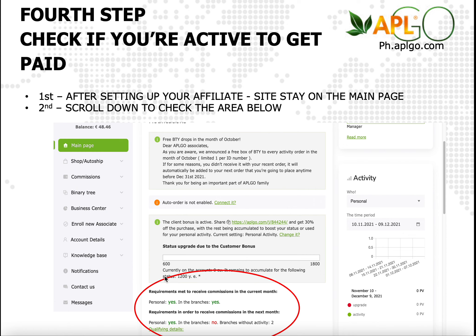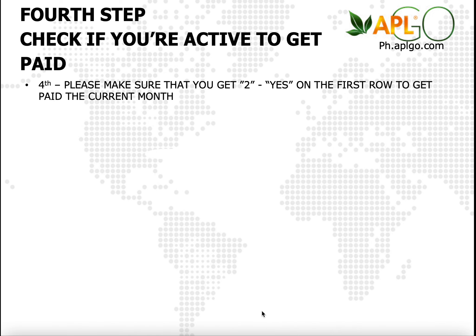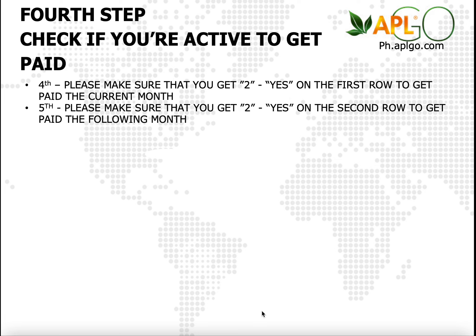It's very, very important. What is this for? What does this tell us? This tells us: if you get two yeses on the first row, and if you have two yeses, this means you are paid — for your PV maintenance as well as your personally enrolled — so you do qualify for the current month to get paid, or for your commissions.